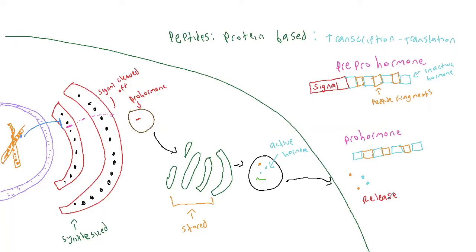Think of it like a glow stick when you go trick-or-treating. You only want to activate the glow stick when you're ready to go outside — you don't want to activate it when you first buy it from the store, because it would degrade. Same with hormones — you only want them active when they are released. Let's take a short break. Come back in five minutes, go ahead and stretch, grab a snack.